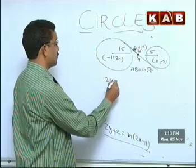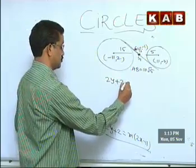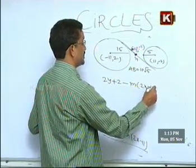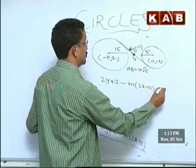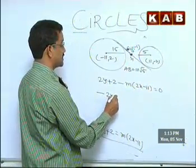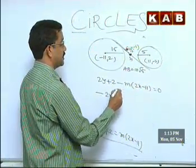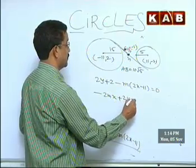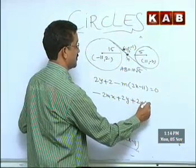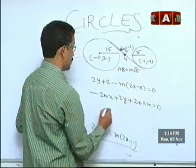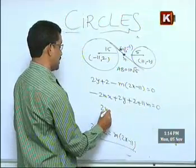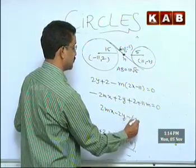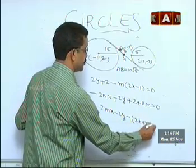Rearranging: 2y + 2 - m(2x - 11) = 0, which gives -2mx + 2y + 2 + 11m = 0, or 2mx - 2y - (2 + 11m) = 0. This is the equation of the tangent line.